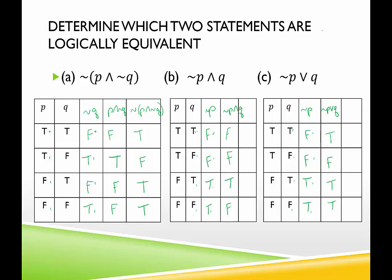Let's see how these fare. In the first row, we have true, false, and true — so A and C match, B doesn't. False, false — good for A and C. True and true, true and true. So A is equivalent to C. B, you weren't good right off the bat. So not (P and not Q) is equivalent to not P or Q.